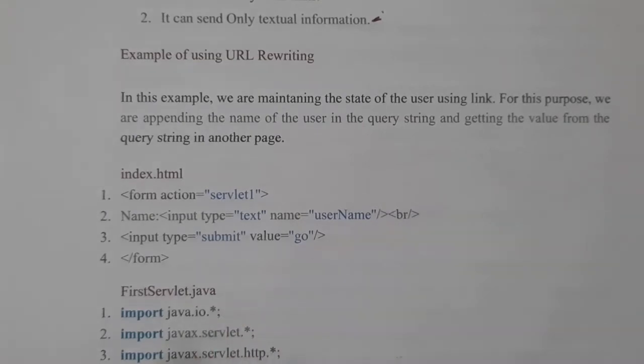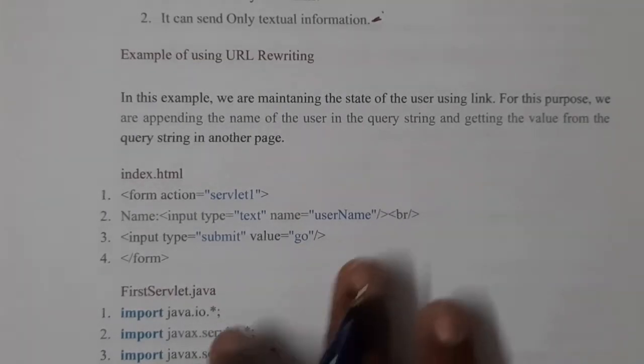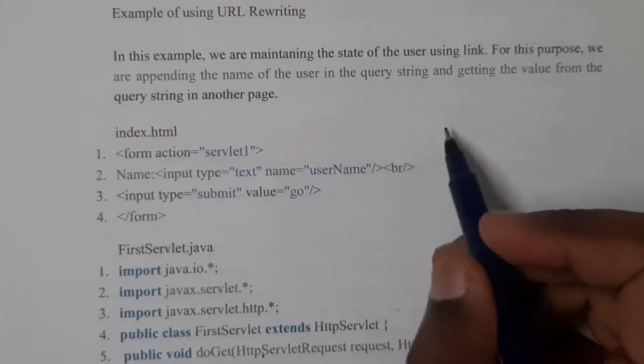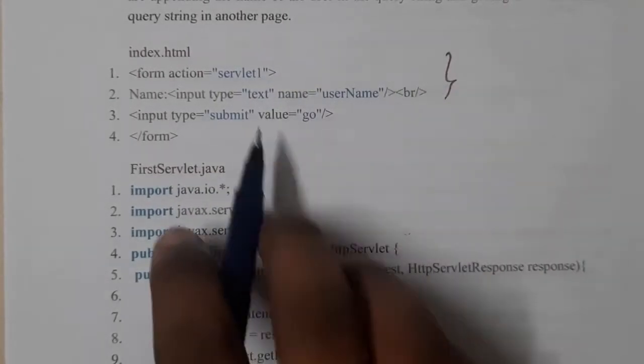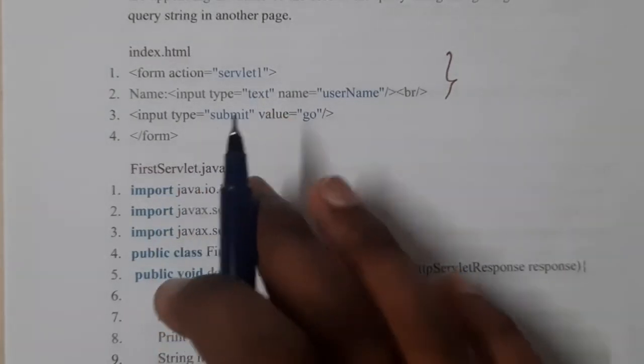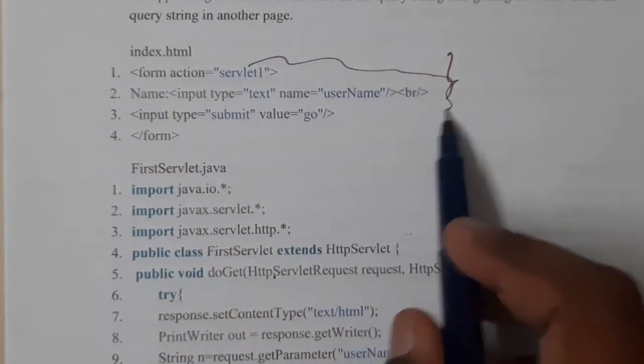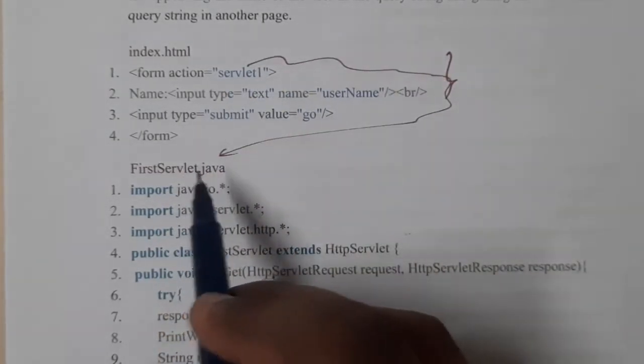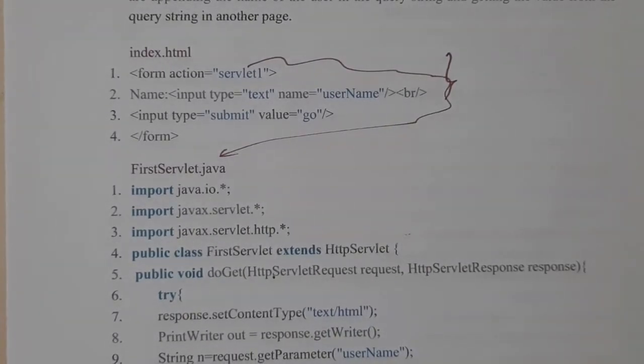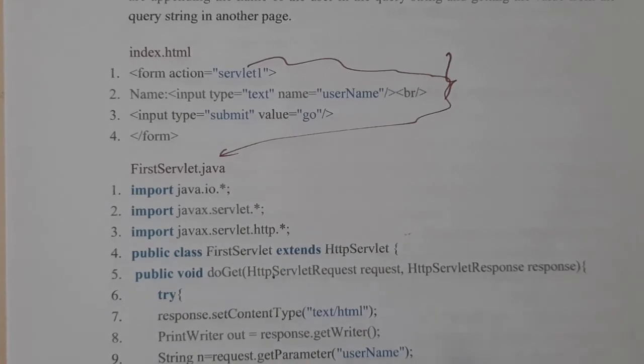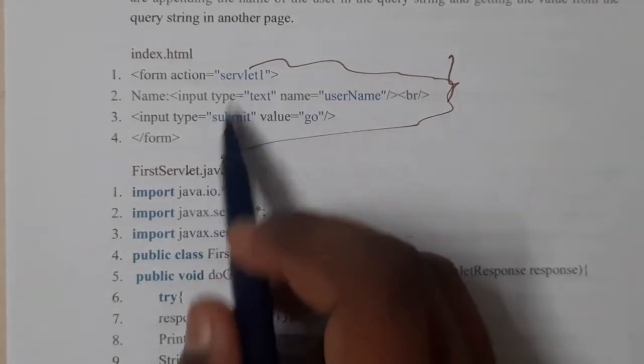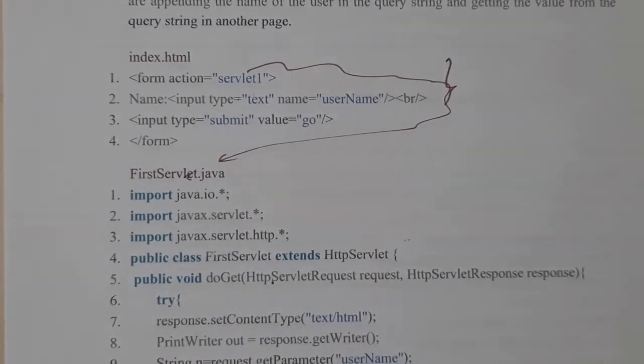The same we are collecting the username and we are clicking go. Once you enter the username, the action is nothing but servlet one. I think the names are given wrong - this servlet one is nothing but servlet for the servlet. Or you can even connect it with the help of the XML file. If it is connected these two are same then you can say that it's correct. So you wrote the boilerplate code again.